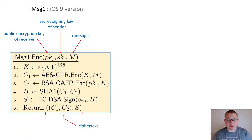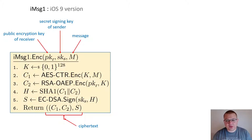Let us start by examining the old end-to-end encryption protocol used by iMessage in iOS version 9, prior to 2016. To send a message, the sender encrypts it with AES-CTR using an ephemeral encryption key sampled uniformly at random. It then encrypts the symmetric key using the recipient's RSA public key. Finally, the sender signs the hash of the produced ciphertexts using its own signing key, and packs the three values into a single ciphertext.